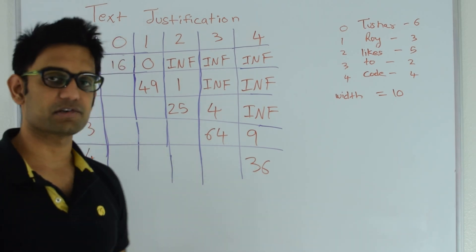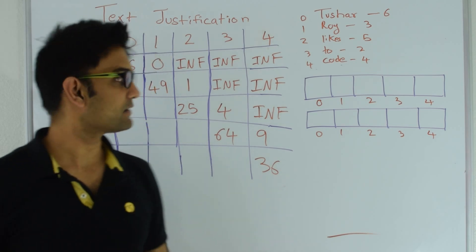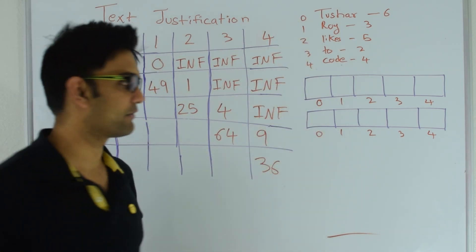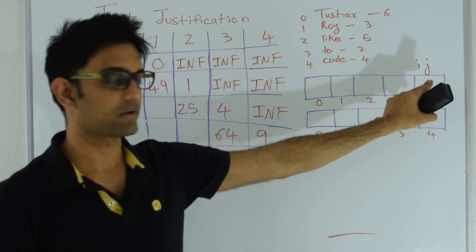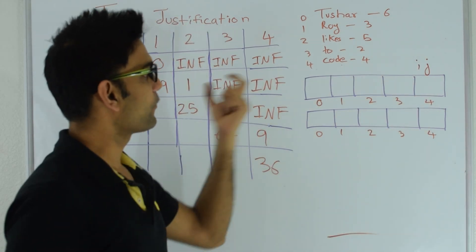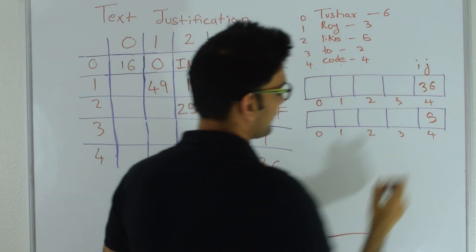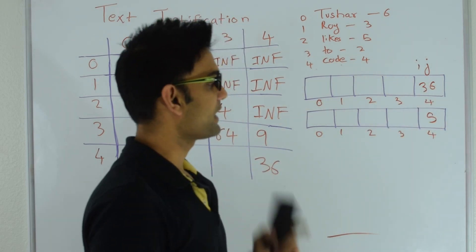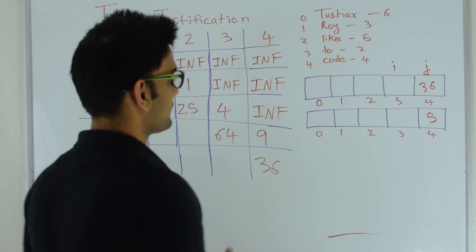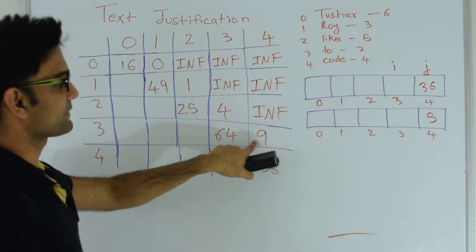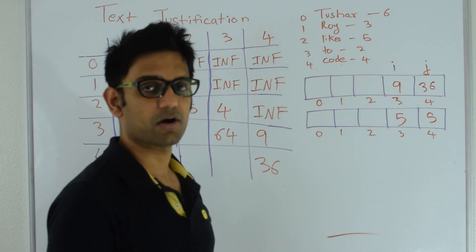Now let's look at how to use this cost matrix to decide where to put line breaks. I have 2 additional arrays of the same length as the number of strings: one stores the minimum cost, and the other stores the result. Starting from the end: when i=4, we just have string 4, cost is C(4,4) = 36. We store 36 in the minimum cost array and put value 5 in the result array, meaning strings from 4 to 5 (excluding 5) are on one line. Then decrement i to 3: C(3,4) = 9, so we can have strings 3 and 4 on one line. Store 9 in min cost and 5 in the result array.